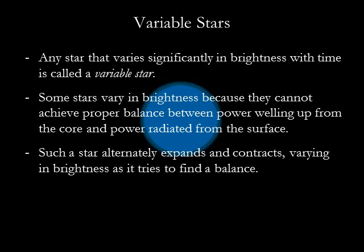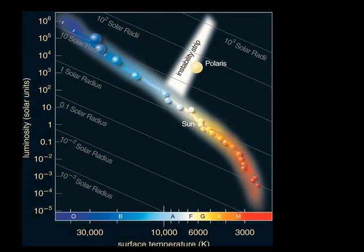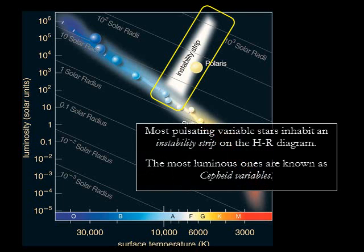Not all stars shine steadily like our sun. Any star that varies significantly in brightness with time is called a variable star. Certain types of variable stars cannot achieve balance between the power coming from their core and the power radiated out to the surface. These stars expand and contract as they try to find a balance. Most of these pulsating variable stars inhabit the strip called the instability strip on the HR diagram. The most luminous of these stars are known as Cepheid variable stars. They are significant both because they are bright, but also because their periods of pulsation are closely related to their luminosities. Cepheids have played a key role in helping us establish the distances to many galaxies beyond the Milky Way.